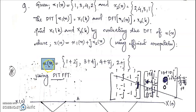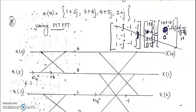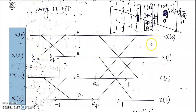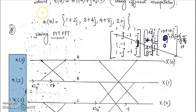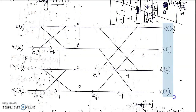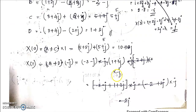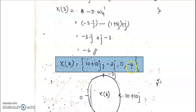You can compute the DFT of x(n) using any method. Here we use the DIT-FFT algorithm. We give x(n) as the input, and you will get x(k) as the output. We use the four-point DIT-FFT algorithm with the input x(n) as written. You will get the DFT of x(n), that is x(k), as 10 + 10j, −2j, 0, and −6.